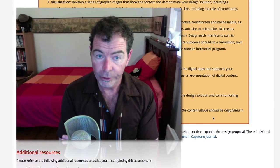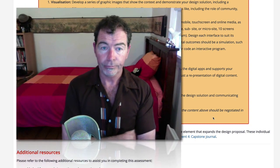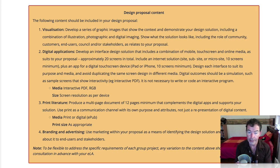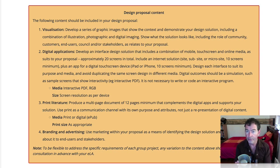For the most part, you'll all probably have to do each of these stages. First stage: visualisation — develop a series of graphic images that show the context and demonstrate your design solution, including a combination of illustration, photographic and digital imaging. Part 2: digital applications — develop an interface design solution that includes a combination of mobile, touchscreen and online media, as suits your proposal. Approximately 20 screens in total; include an internet solution — microsite, subsite or website — 10 screens minimum, plus an app for a digital touchscreen device.